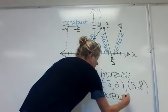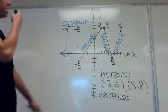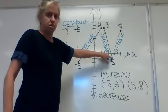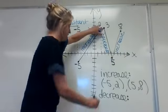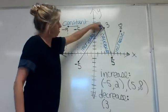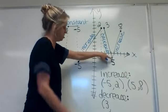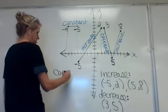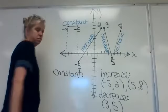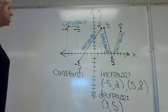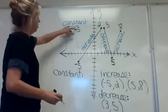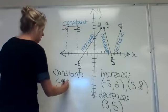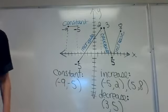Then it wants to know where it is decreasing. The decrease interval starts at positive three and goes down until it gets to positive five. And where is it constant? This little interval starts at negative nine and goes all the way until it gets to negative five.